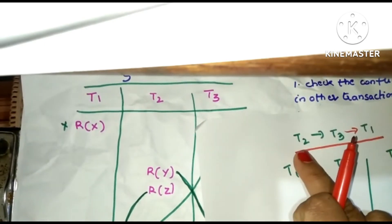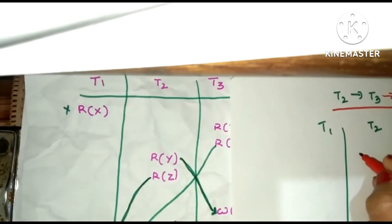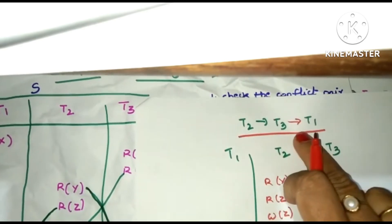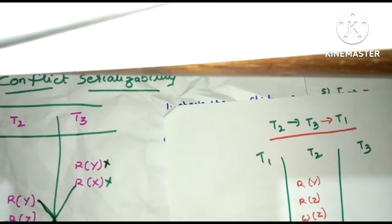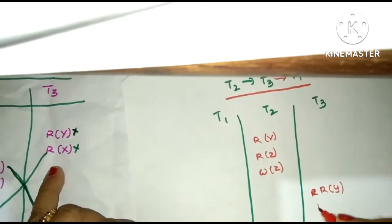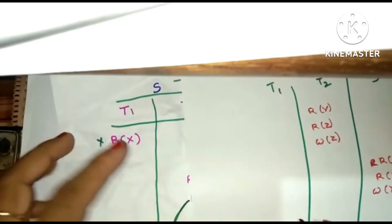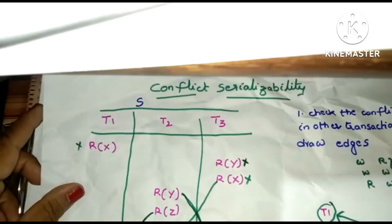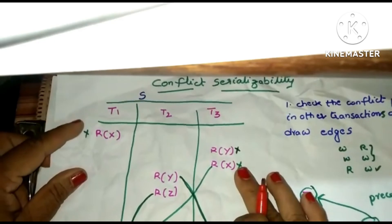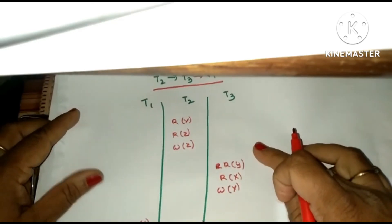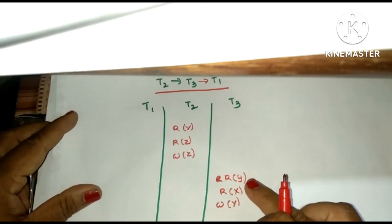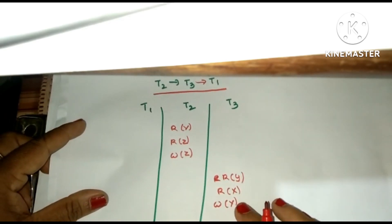This parallel schedule is now converted into serial schedule T2, T3, T1. Write all T2 transactions first: R(Y), R(Z), W(Z). After T2, write T3 transactions: R(Y), R(X), W(Y). After T3, write T1 transactions: R(X), R(Z), W(X), W(Z). Any non-serial schedule that can be written as a serial schedule is called serializable. This is the example for conflict serializability.